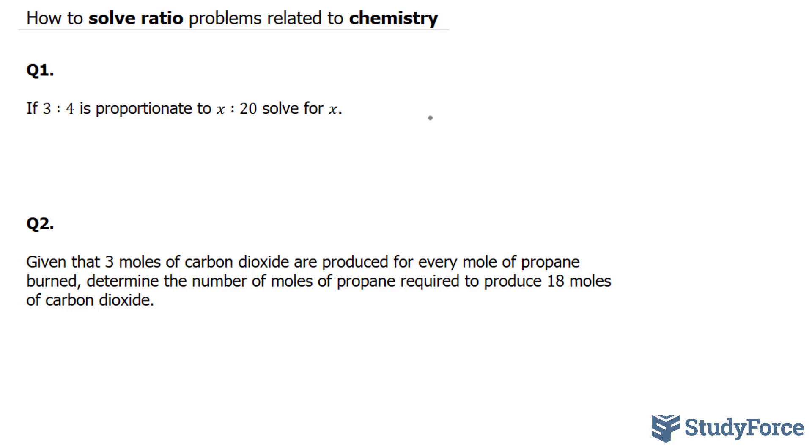So we have a situation where we have 3 to 4 and x to 20. There are multiple methods to find out what x is. I'll show you two. The first method is, notice how in this completed part of the ratio, you have 4 here and you have 20 here. What do you multiply 4 by to get to 20? If you thought 5, you are correct. So if you multiply this by 5, you should also multiply 3 by 5 to get your x. So 3 times 5 is 15, therefore x is equal to 15.